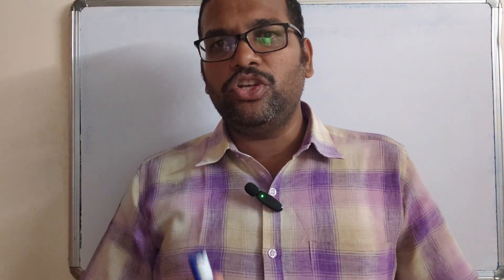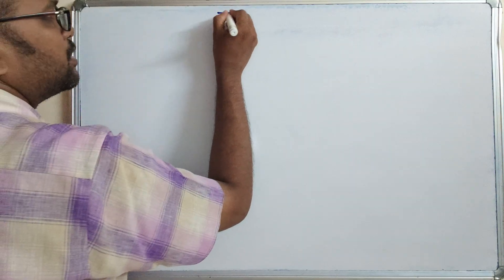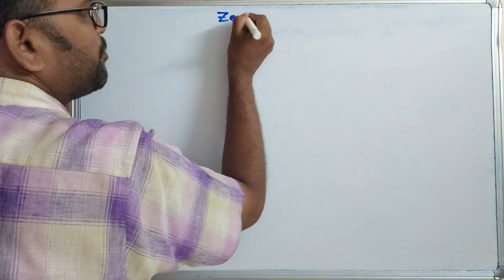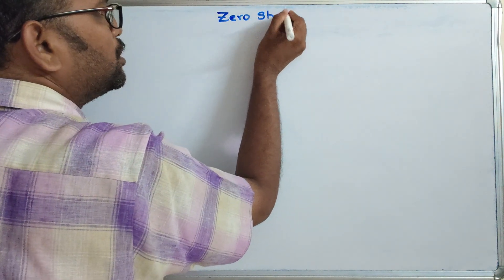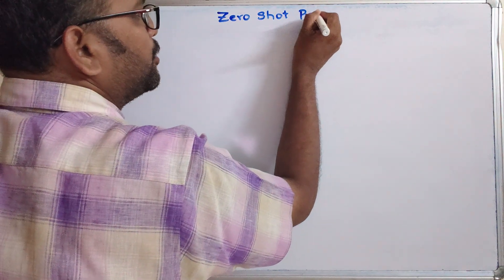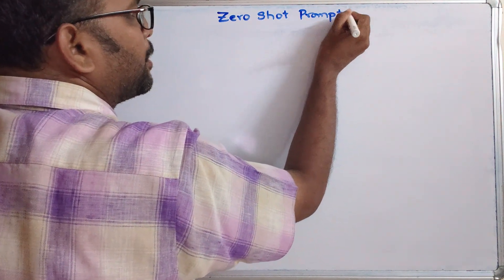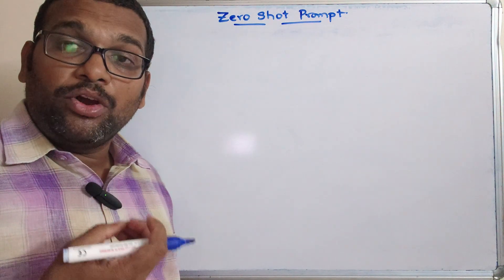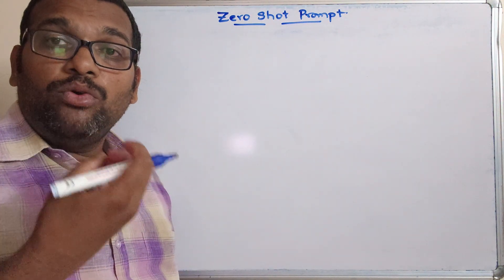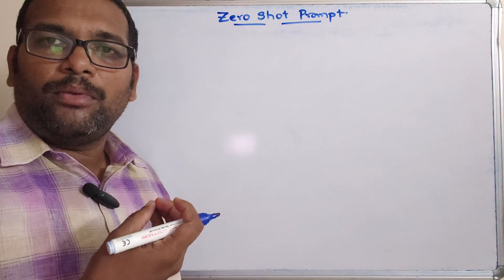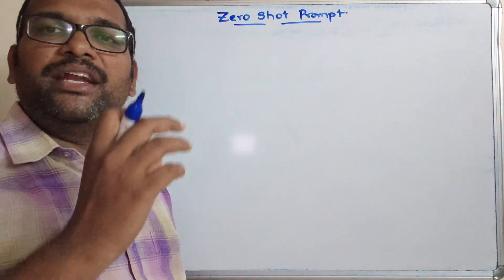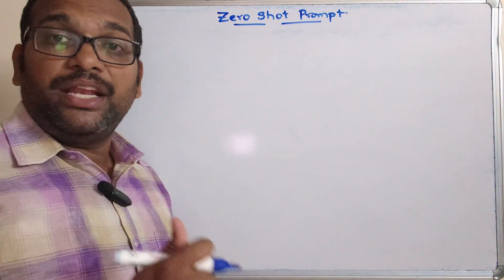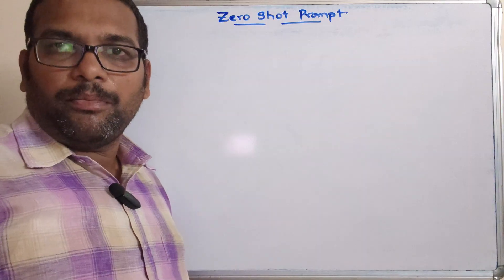Let us start with the first type of prompt, that is the zero-shot prompt. The prompt is most important in Gen AI because how clearly we are mentioning the prompt, that much clearly we will be getting the output. So that is very important while writing the prompt.